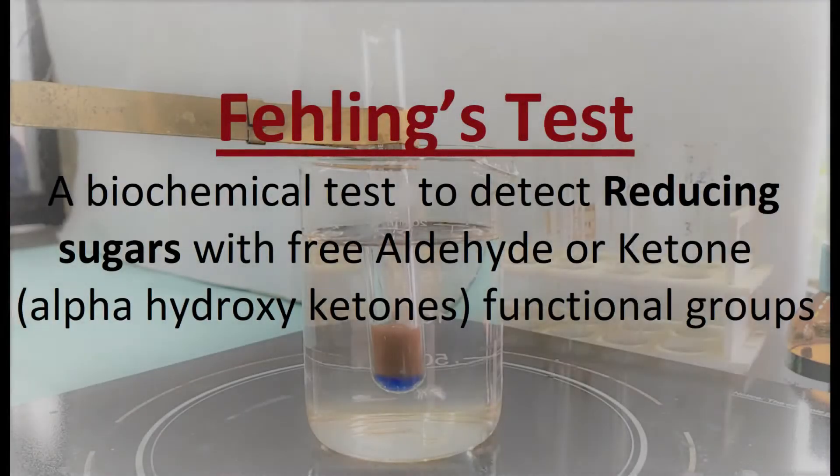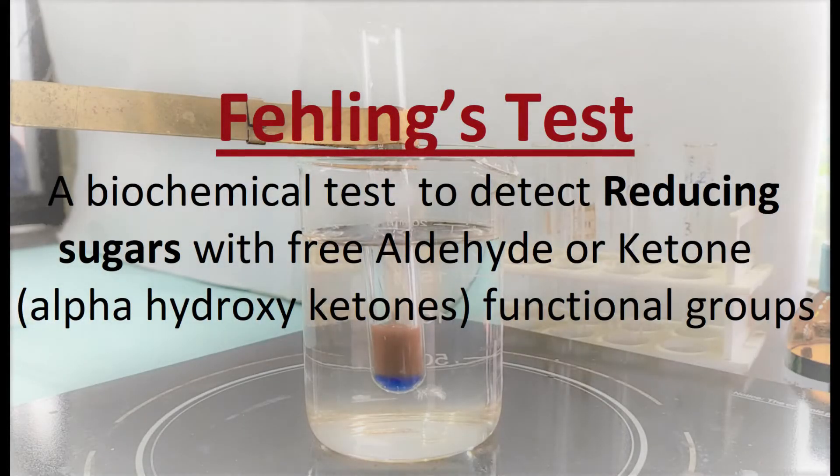Fehling's test is a biochemical test commonly employed to detect the presence of reducing sugars with free aldehyde or ketone functional groups, specifically alpha-hydroxyketones.